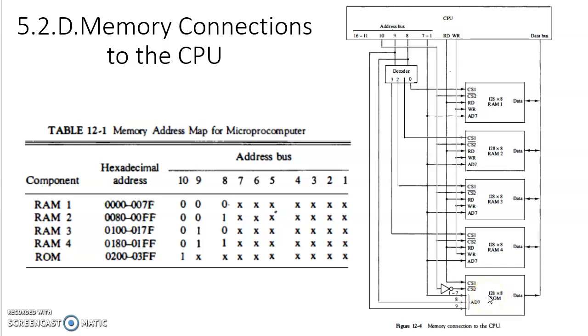Sorry, I earlier told 1 MB. It is only 1 KB. 1 KB of main memory is constructed with the help of 4 RAM chips and 1 ROM chip. This is just for an example. If you can construct 1 KB, you can construct 1 MB, 1 GB, 1 TB, any size of the memory with the help of these chips.